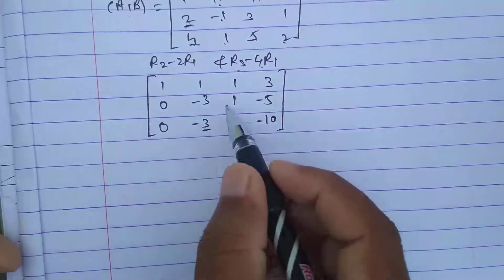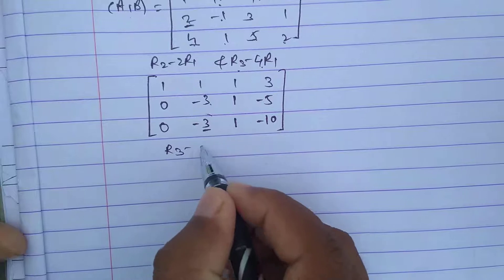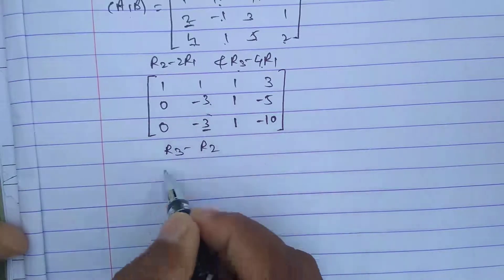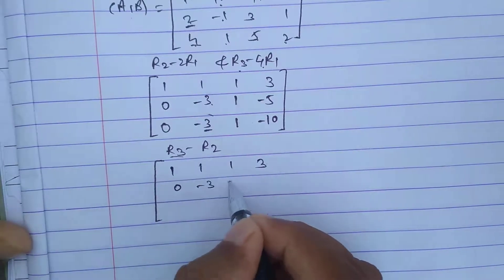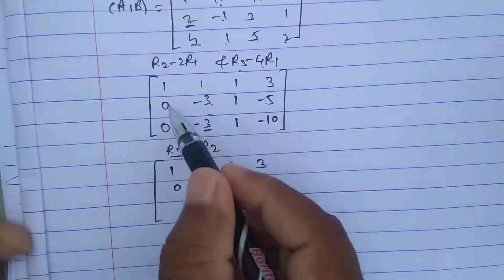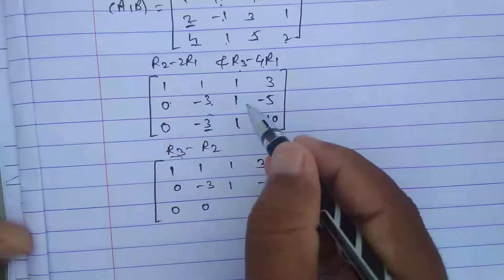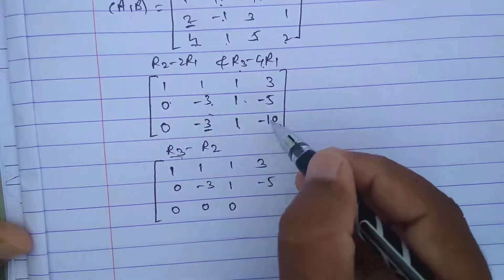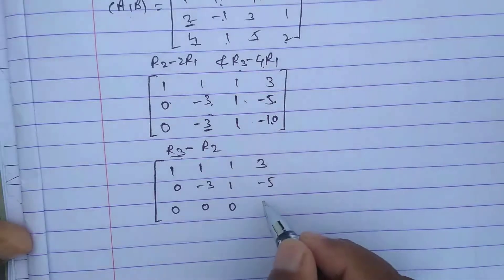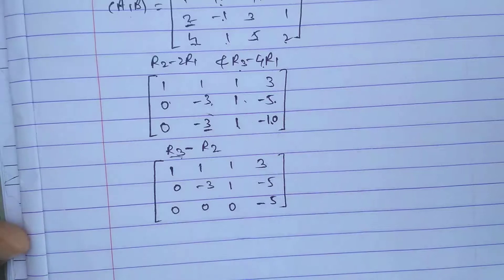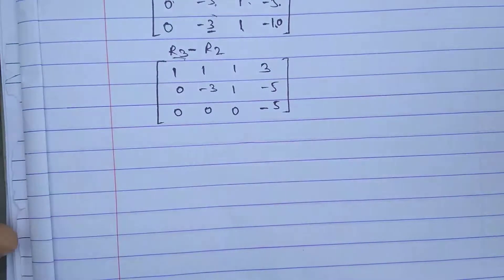Both R2 and R3 have the same leading values, so we apply R3 minus R2 to make the entry zero. R1 and R2 stay as they are. For R3 minus R2: 0 minus 0 is 0, minus 3 plus 3 is 0, 1 minus 1 is 0, and minus 10 minus minus 5 is minus 5. This matrix is now in echelon form.